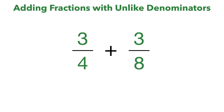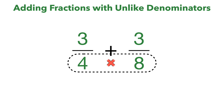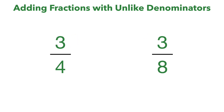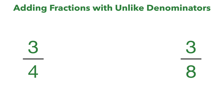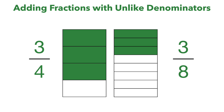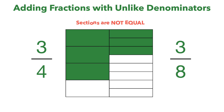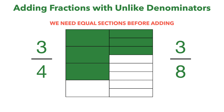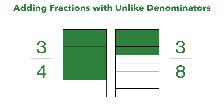But what about adding fractions with unlike denominators? In this case we have 3 fourths plus 3 eighths, and as you can see 4 and 8 are not like denominators, so we have to get them like so we can add them. We're going to look at a visual example of why this is. If we have 3 fourths and 3 eighths and put these together, you can see that the sections are not equal — but if we're going to add them, we need our sections to be equal. That is why we need to get our denominators the same.